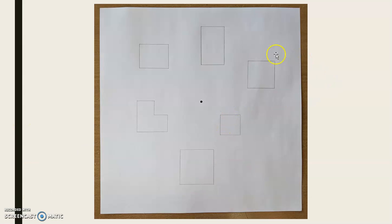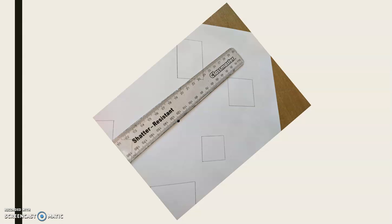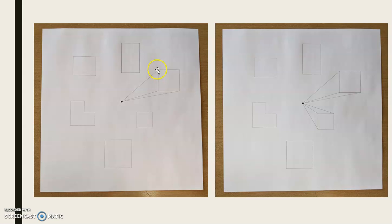I'm starting on this square here. What I've done is I've lined my ruler up with this corner going down into the focal point and I'm drawing a line straight down. I'm then going to do it from this point and from this point. Can you see I've done three straight lines from one, two, three corners straight down into that focal point?